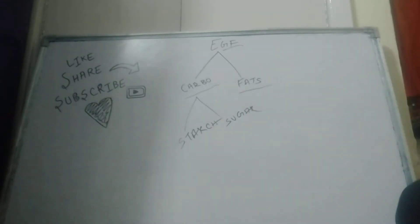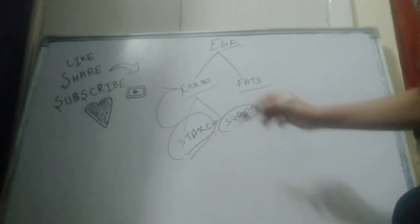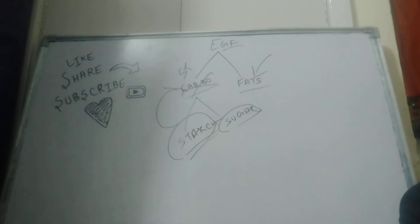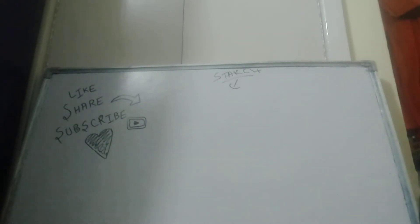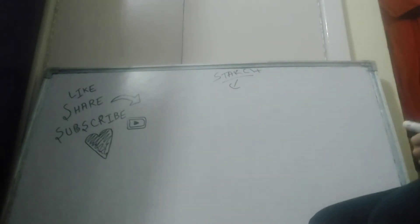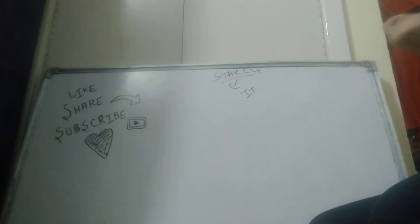Sugar is anything which is sweet in taste. Starch is the real carbohydrate, so you can put starch in place of carbohydrate. This is the first main part of energy-giving food, and the second part is fats. Starch gives us energy — energy to work, to put in force, everything.